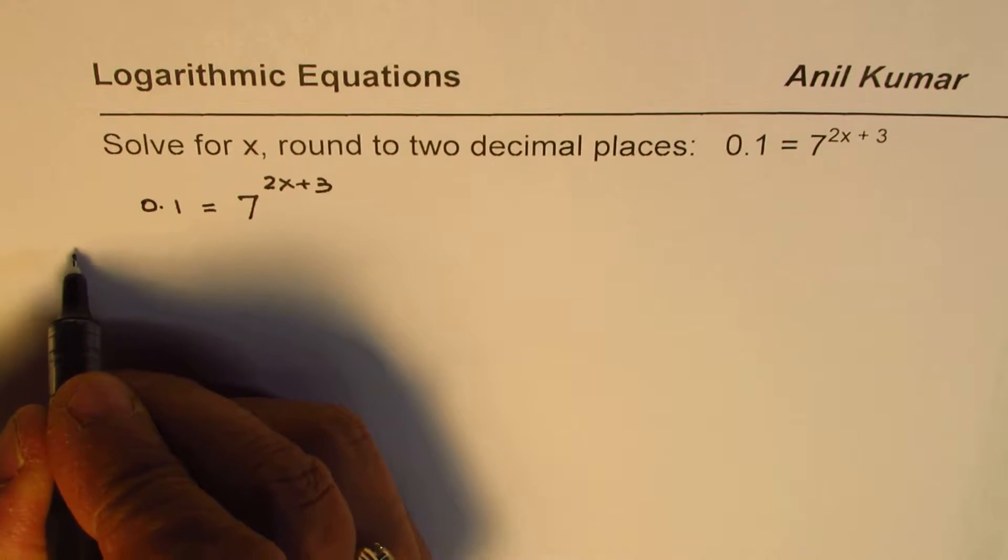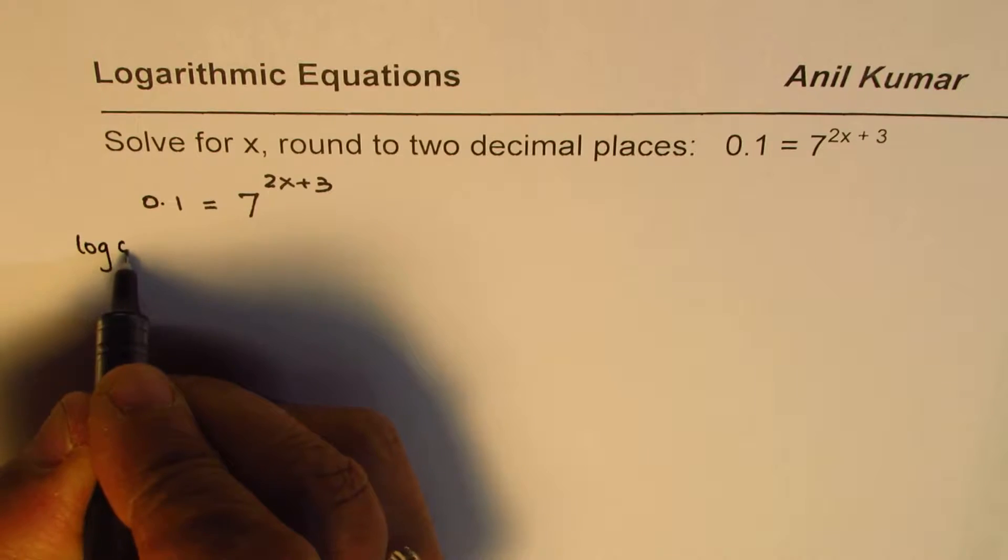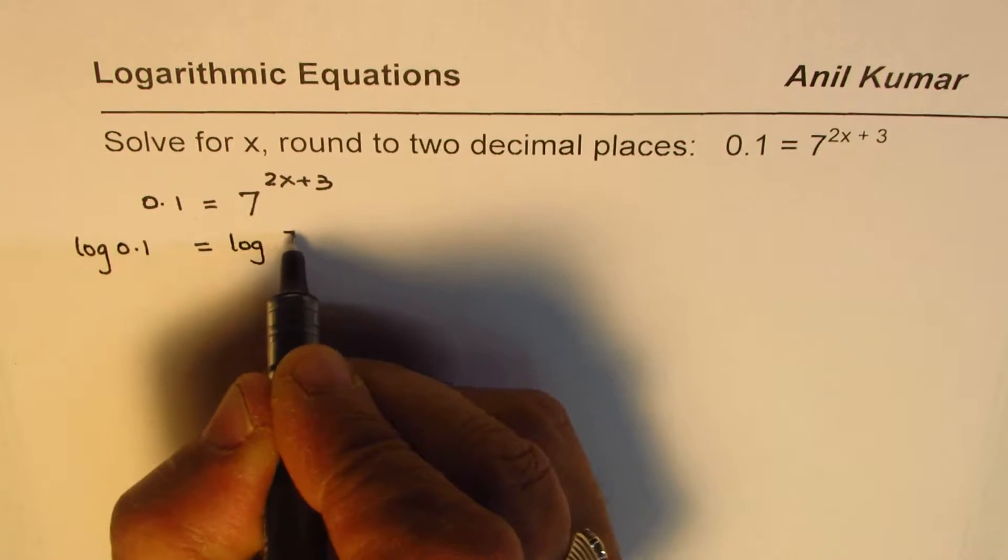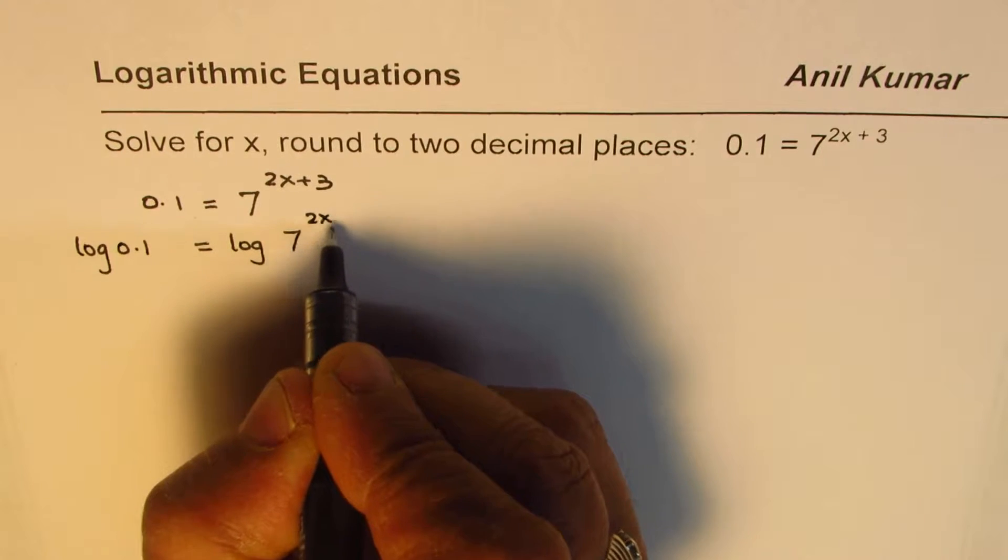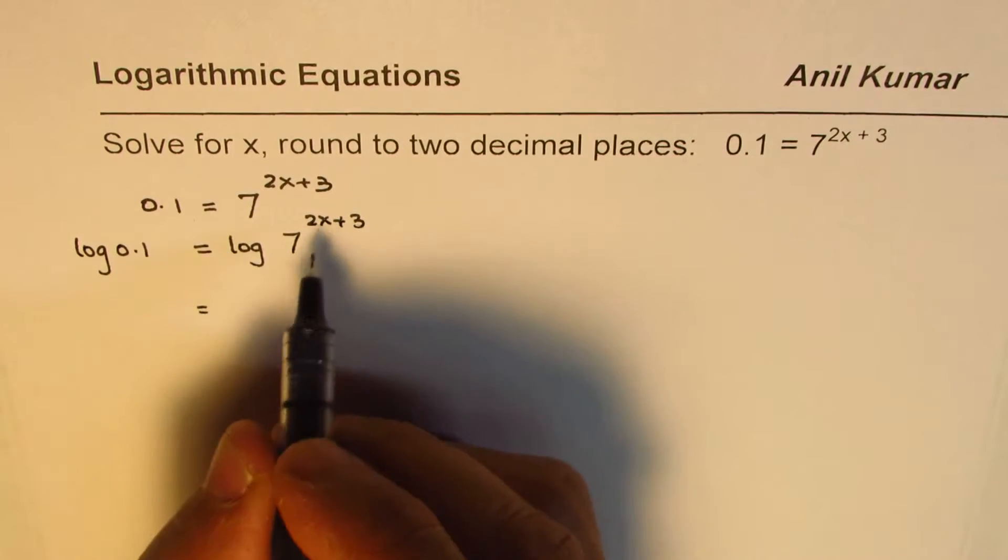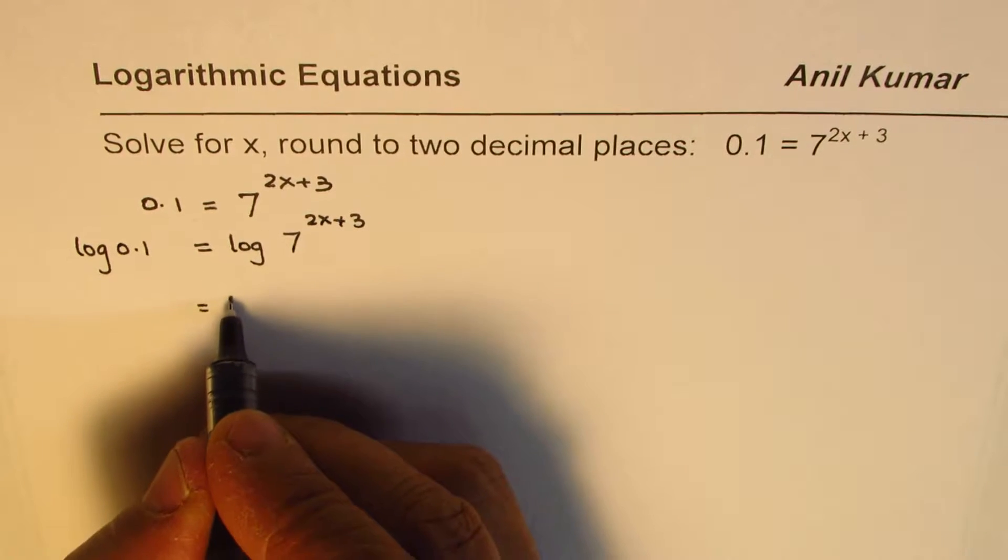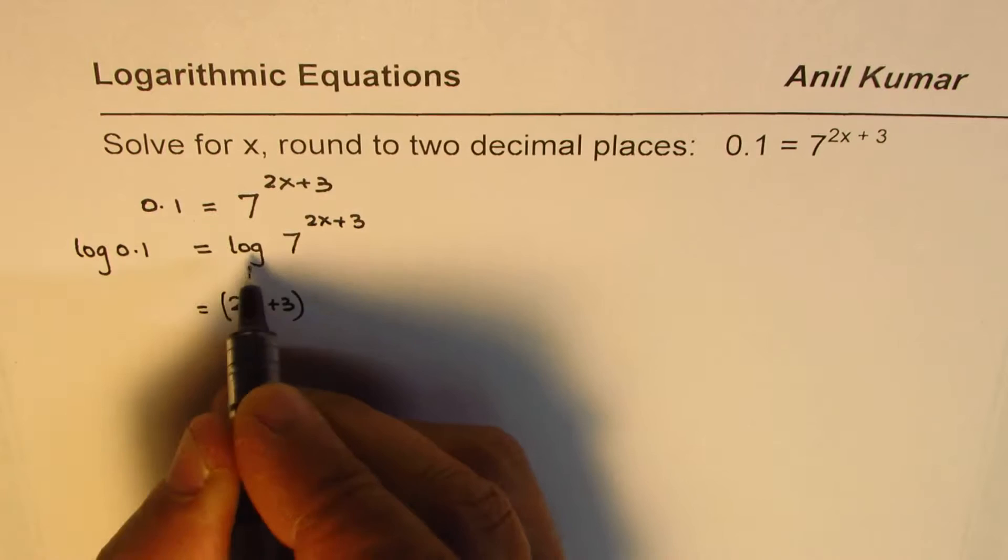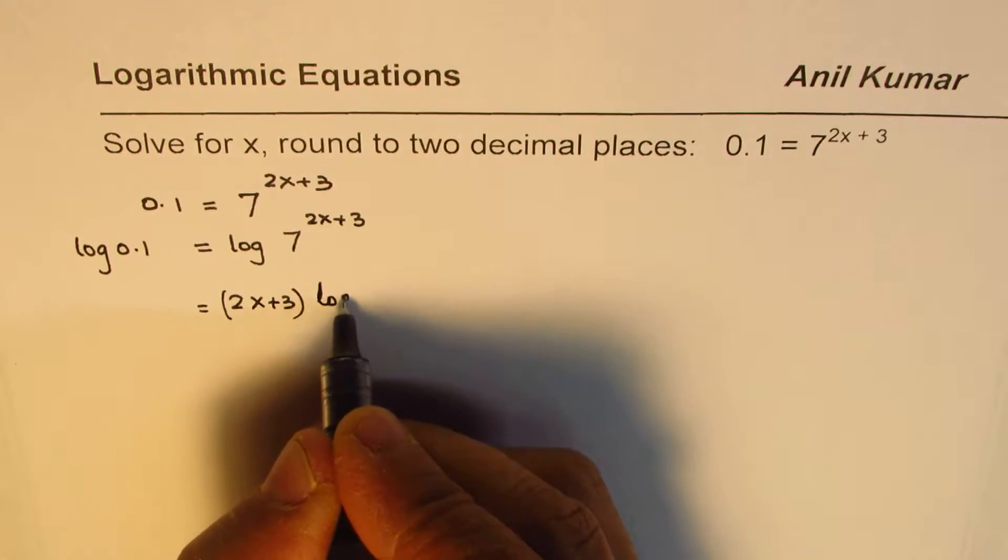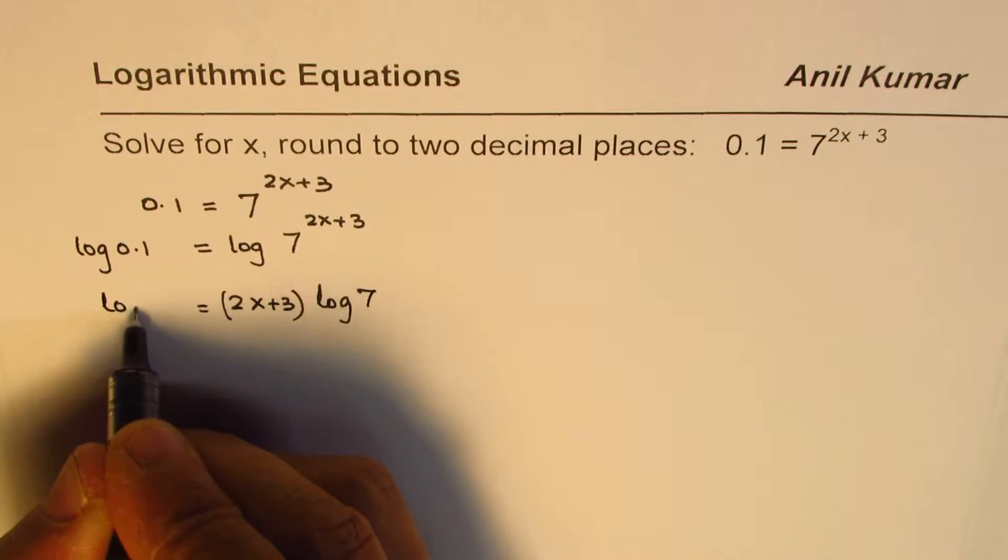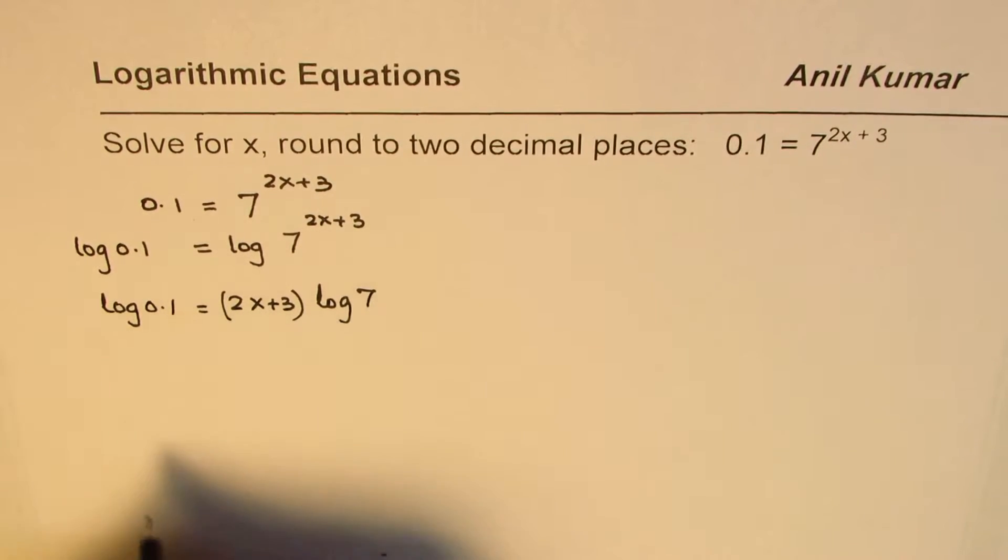So taking log on both sides, we get log(0.1) = log(7^(2x+3)). Now applying the properties of logarithms, that exponent can be written as (2x+3)log(7). So we have log(0.1) = (2x+3)log(7).